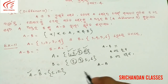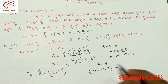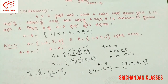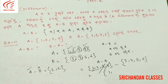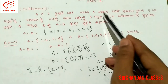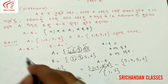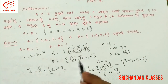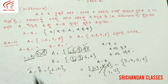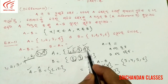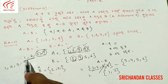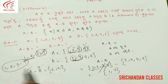So A minus B: look at A set which has 1, 2, 3, 4, minus B set which has 3, 4, 5, 6. We cancel 3 and 4 since they appear in B. The remaining elements of A that are not in B are 1 and 2. So A-B = {1, 2}. Elements in A set but not in B set give us the difference.